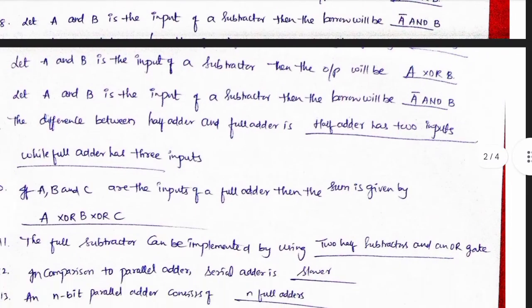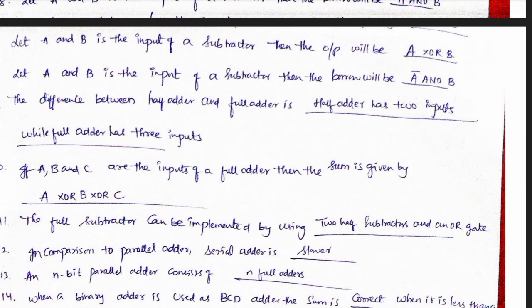Let's discuss the important units. Let's look at the 9th and 10th one. The difference between half adder and full adder. For the 10th one: A, B, and C are the inputs of full adder. Then the sum expression — I'm going to talk about the sum expressions and carry expressions, then the difference and borrow expressions. You can add or subtract. You can find the PDFs in the comments section.